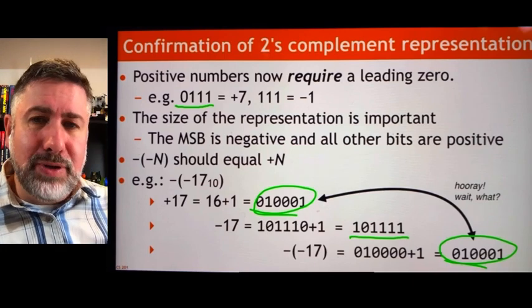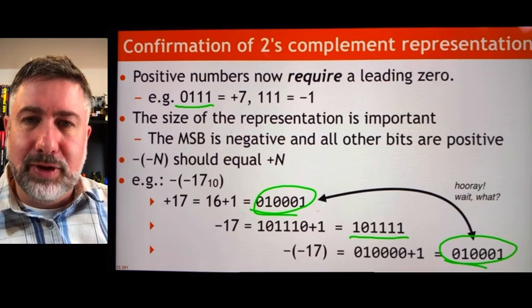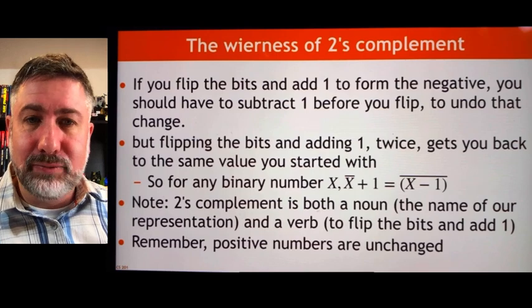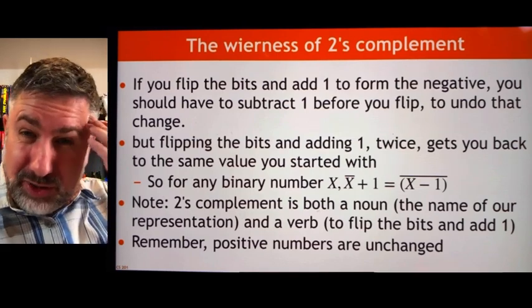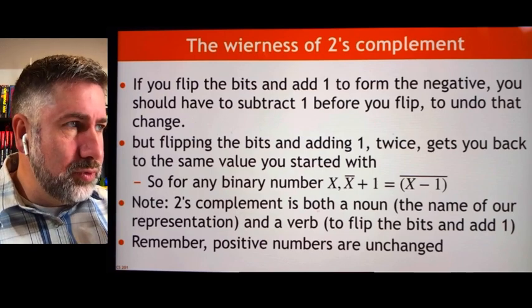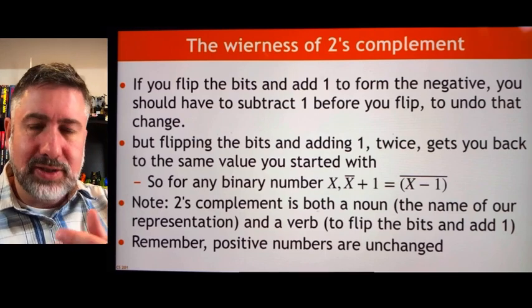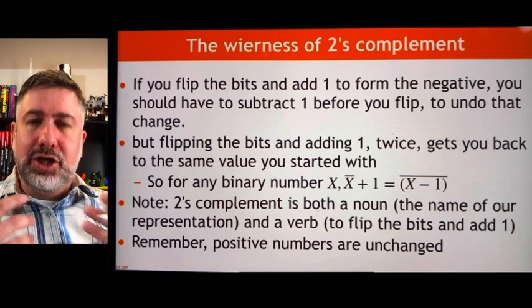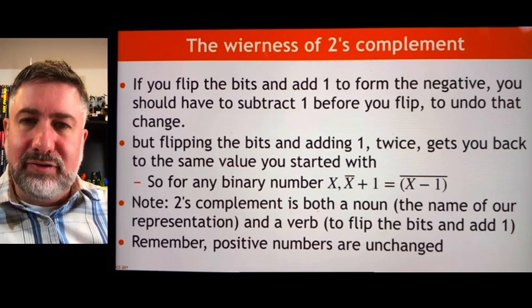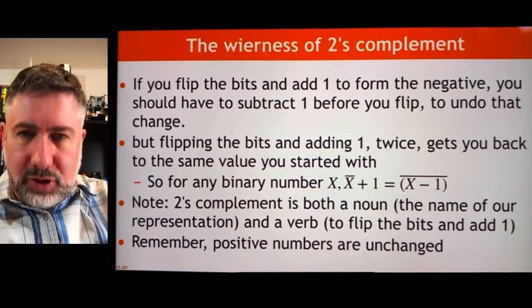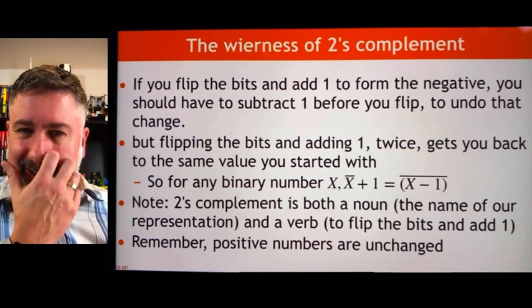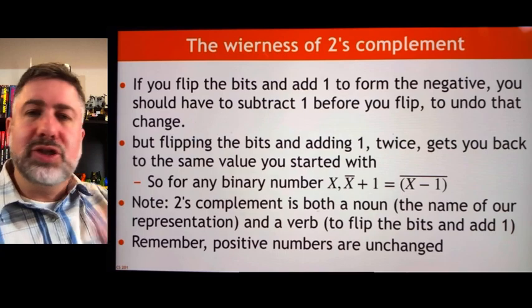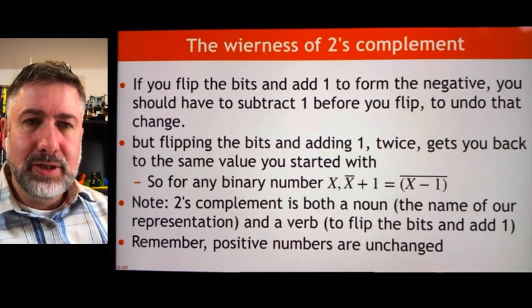It seems a little weird that you can add 1 and add 1 again and still get back the original number — because flipping the bits is actually subtracting value. In the description of this process, we have the words 'two's complement' used twice: it refers to the representation that allows negative and positive numbers in the same space, but also to the operation of changing a value's sign. So 'to take the two's complement' is a verb, and 'two's complement' itself is a noun. Be careful — if asked for the two's complement value of a number, that may just mean give its value in the representation.